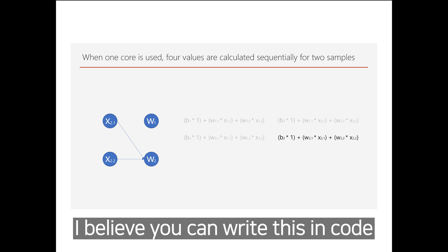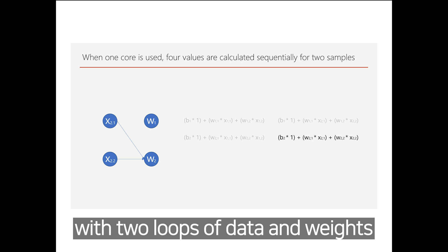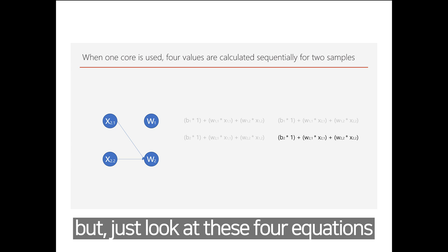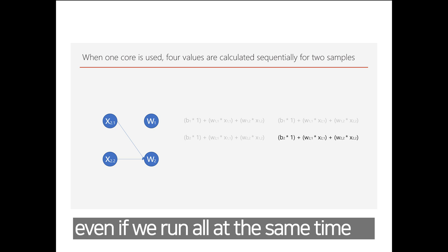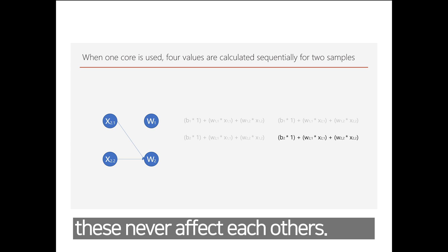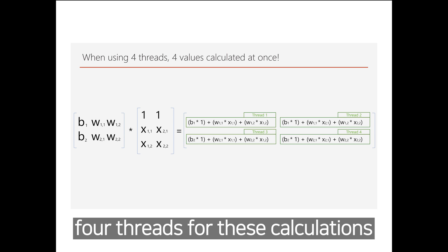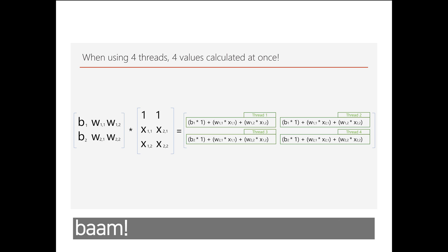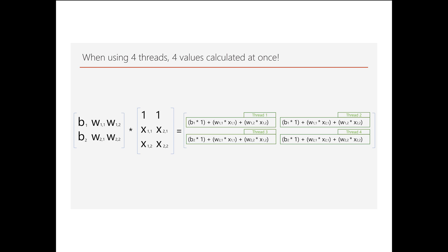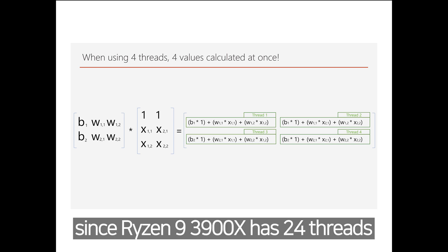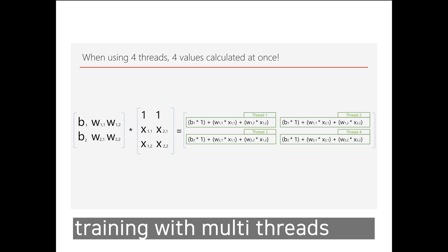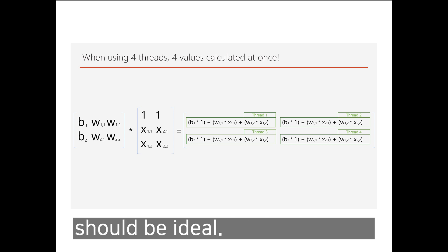Then the next data comes in and calculates for the first weight and for the second weight. You can write this code in Python with two for-loops over data and weights. But look at these four equations — even if we run all calculations at the same time, they never affect each other. In other words, it is safe to run four threads to calculate these four equations at once. Since the Ryzen 9 3900X has 24 threads, training with CPU using multiple threads should be ideal.